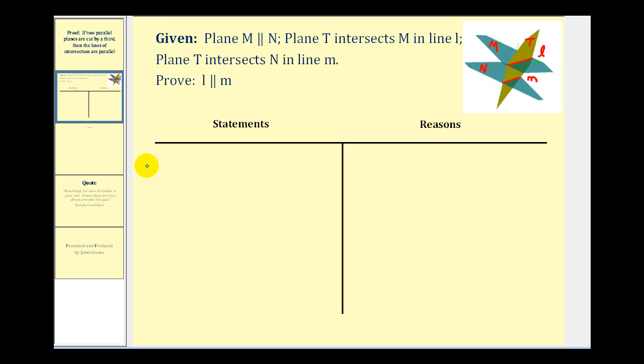So we'll start by stating the given information, and I'll state this in a little different way than it's given. If plane T intersects M in line L, we can say that line L is in plane T and plane M.